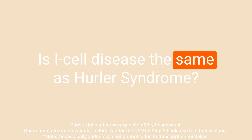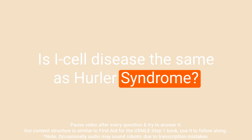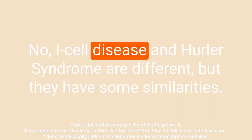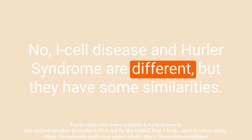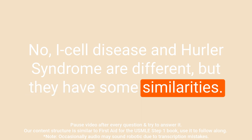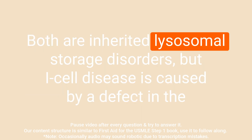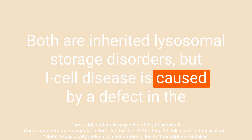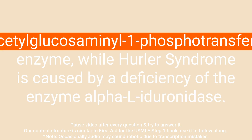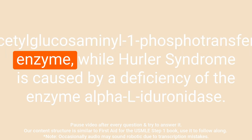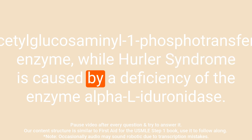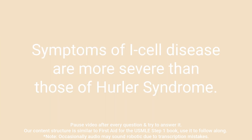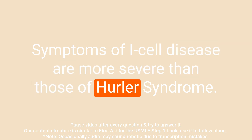Question: Is I cell disease the same as Hurler syndrome? Answer: No, I cell disease and Hurler syndrome are different, but they have some similarities. Both are inherited lysosomal storage disorders, but I cell disease is caused by a defect in the N-acetylglucosaminyl-1-phosphotransferase enzyme, while Hurler syndrome is caused by a deficiency of the enzyme alpha-L-iduronidase. Symptoms of I cell disease are more severe than those of Hurler syndrome.